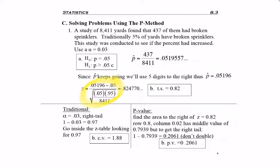So as I enter all of this into my calculator, I get a test statistic that keeps going, but if I'm going to write it with two digits past the decimal, I get 0.82. It's positive. I usually expect a positive test statistic when I have the greater than symbol.